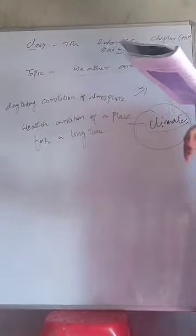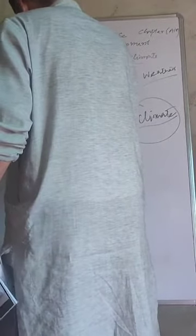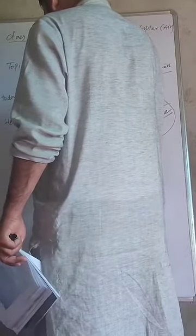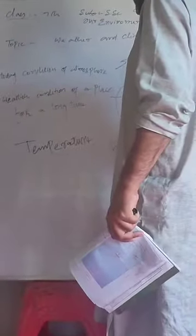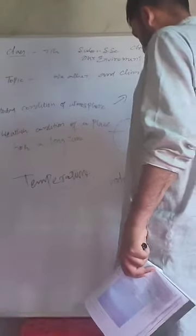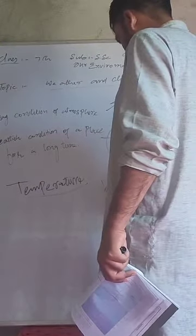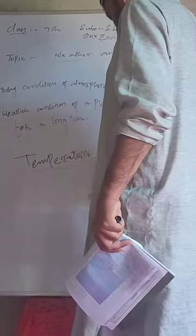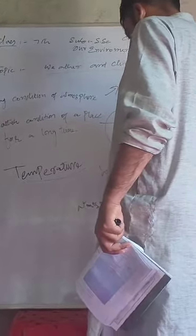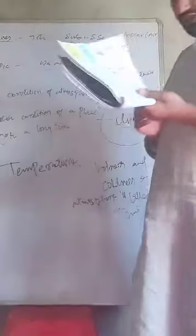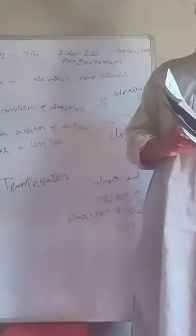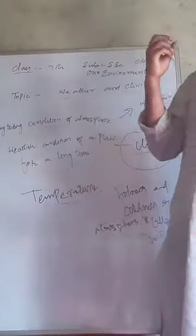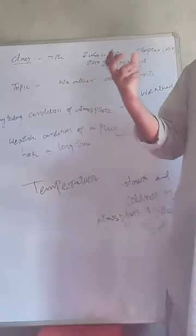After this comes temperature. Temperature means the degree of heat - how much hotness there is. The hotness and coldness of atmosphere is called temperature. When we measure the heat or warmth in something, if it's high we say the temperature is high. When it's cold or at freezing point, we say it's cold and the temperature is down.